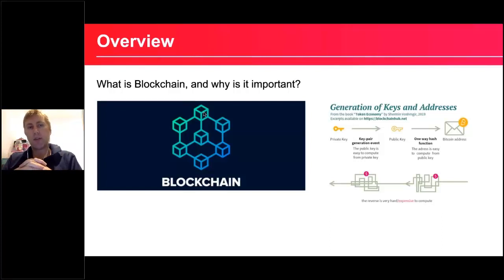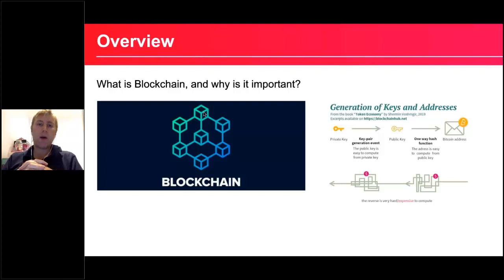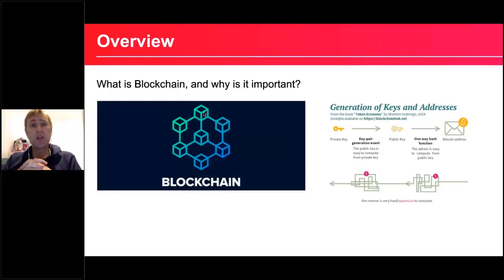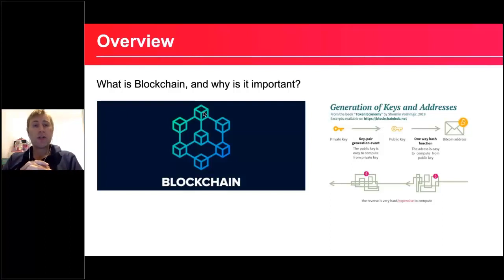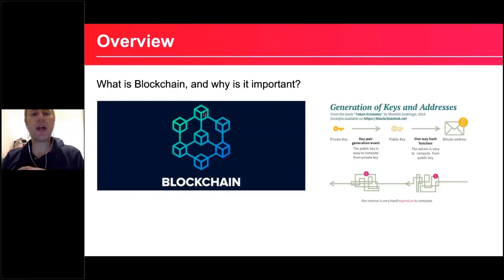In blockchain, rather than referring to private keys per se, we refer to what we call a hash function. Hash functions are important because they allow us to validate large transactions. Each block could contain tens, hundreds, thousands, or even millions of transactions. If each of those transactions takes up kilobytes, checking each and every one bit by bit would take a long time. By using hash functions and hash values, we can actually validate things very quickly.